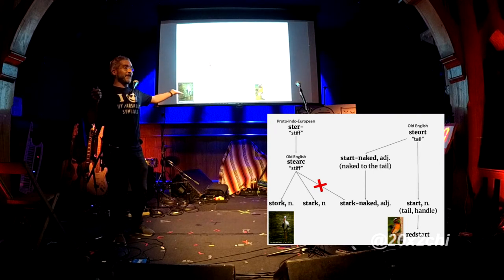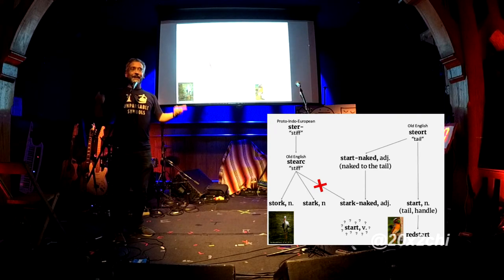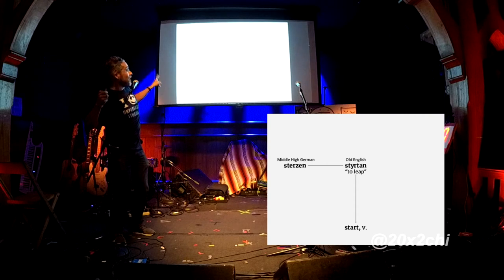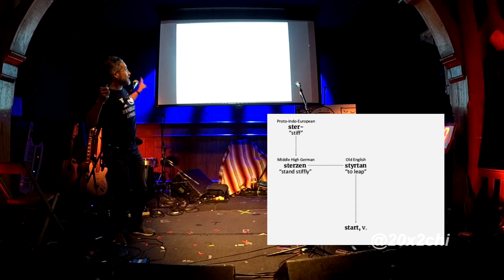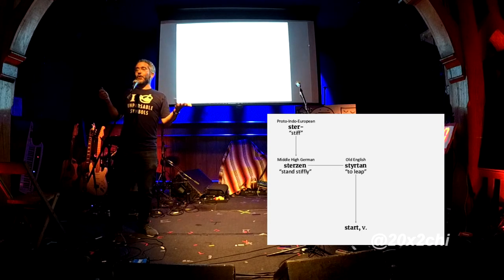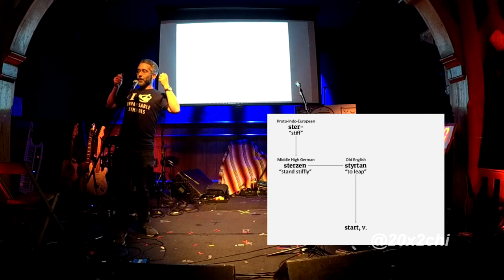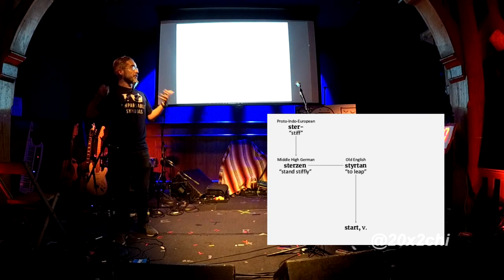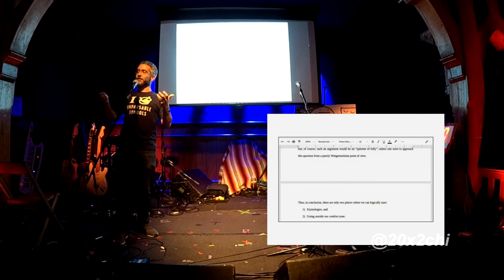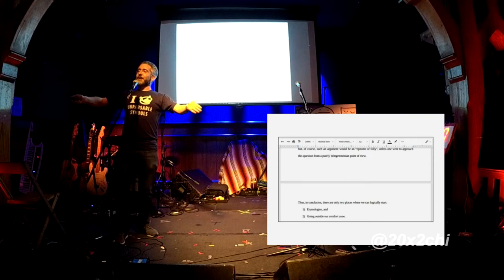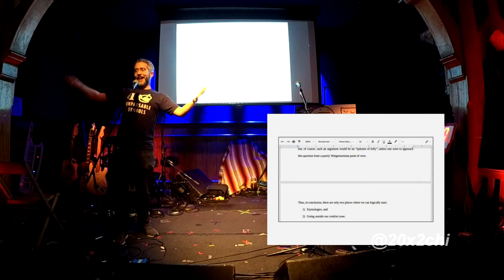But where does that leave the verb "start" — to start, to begin? Well, it turns out that "start" comes from the Old English "stiartan," which means "to leap," which is related to the Middle High German "stiartzen" — wait for it — which means "to stand stiffly." So, to conclude: where do we start besides etymology? I learned something cool and awesome by going outside my comfort zone and not fixating on computer science. And I got to share it with all of you. I think that a good place to start is by going outside our comfort zone. Thank you.